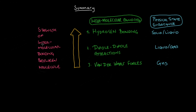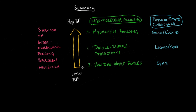In summary, the strength of intermolecular bonding increases as we move from van der Waals forces to dipole-dipole attractions to hydrogen bonding, and that's reflected in the physical state of the substance. Van der Waals forces — the weakest — are typically seen among gas molecules. Dipole-dipole attractions are seen among liquids and gases, while hydrogen bonding is seen among solids and liquids. There is a clear increase in boiling point as we move up this hierarchy.